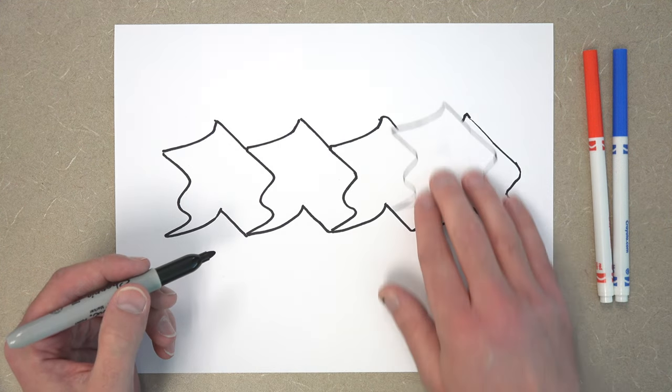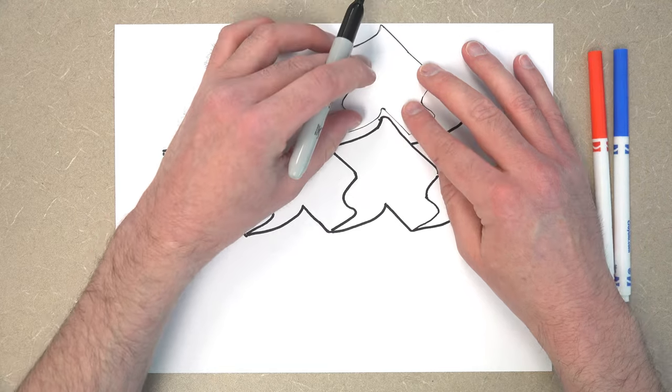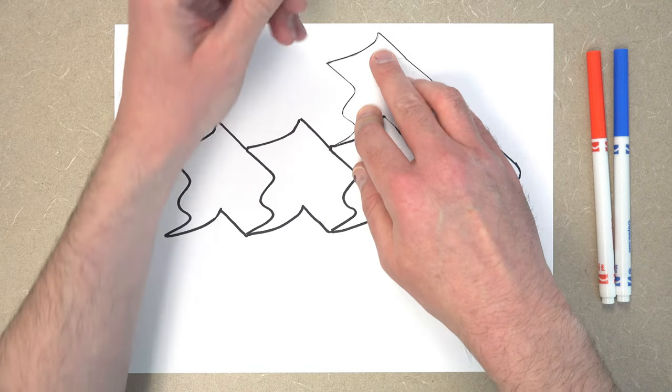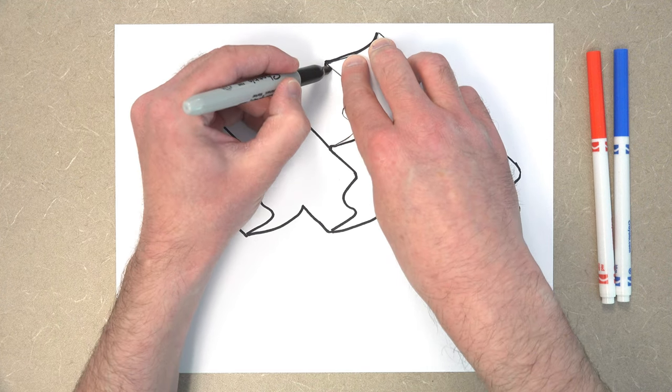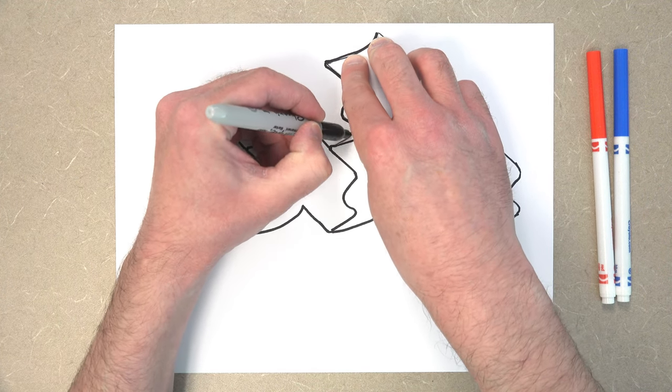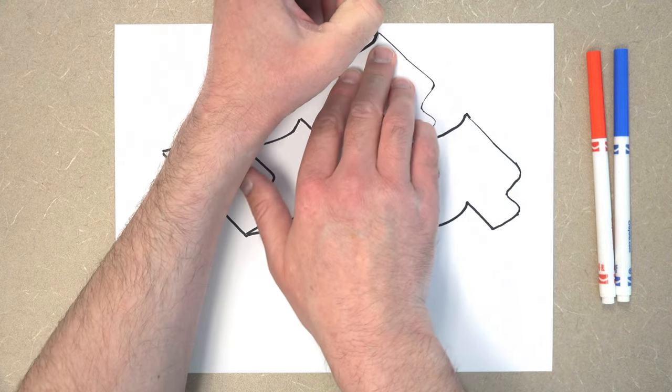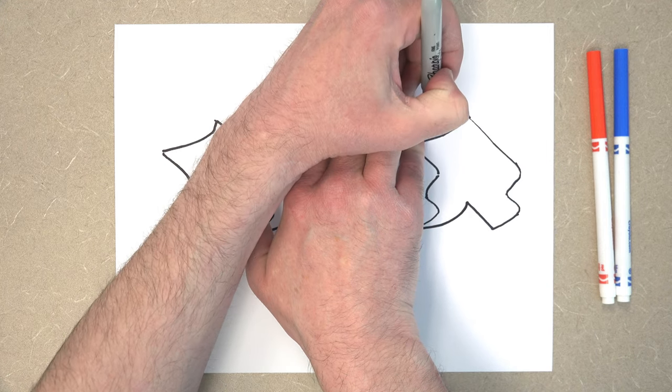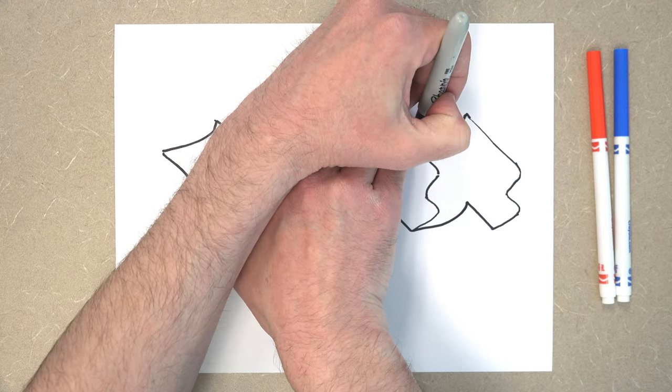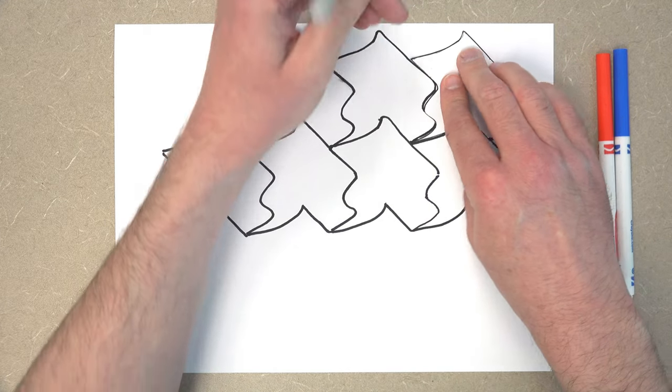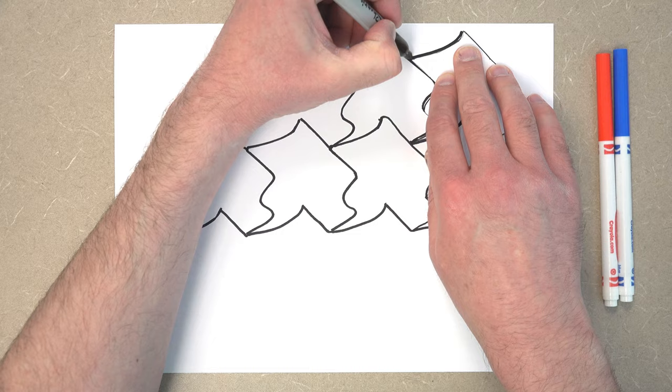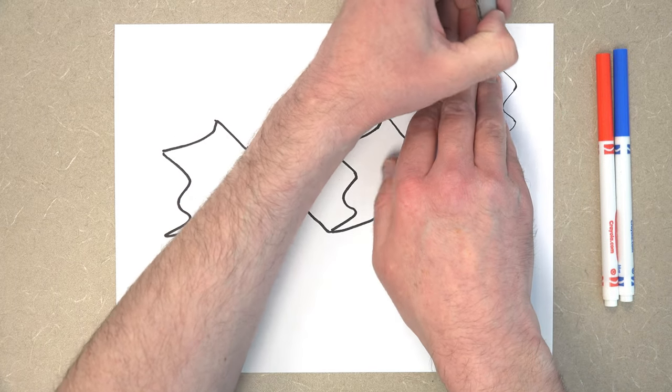Now once we got our row, we can move up, fit it into another piece of the outline and start again. You can take your time with it. If you make some mistakes, then congratulations, you're human. Because we all make mistakes, but it just makes your art a little more unique.